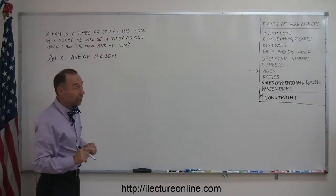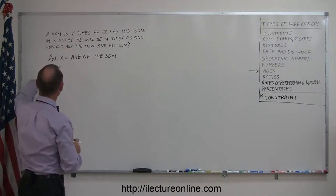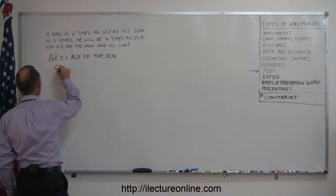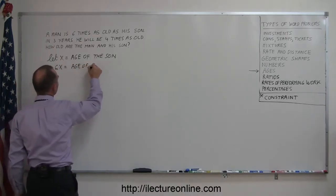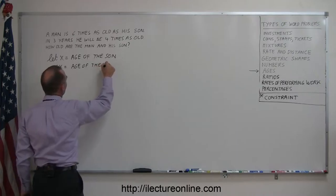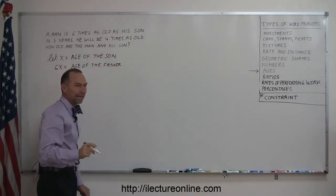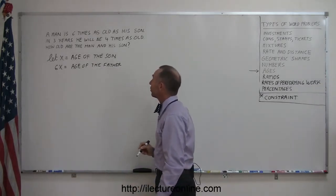Now we need to express the father's age in terms of x, and since the man is six times as old, that means 6x equals the age of the father. Now, of course, we're not ready yet to solve the problem, but we have some more information.